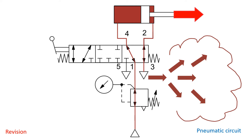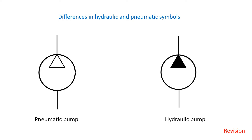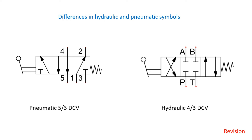Here we have an example of similarities between hydraulic and pneumatic symbols. On the left is the symbol for a pneumatic pump; on the right is the symbol for a hydraulic pump — the only difference is that in the hydraulic pump, the triangle is filled. Another example: on the left is a pneumatic 5/3 directional control valve, and on the right is a hydraulic 4/3 directional control valve. They both do the same work, and we'll look at other similarities later in the lecture.